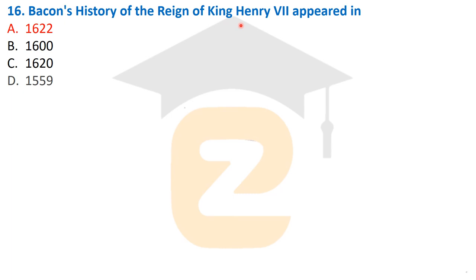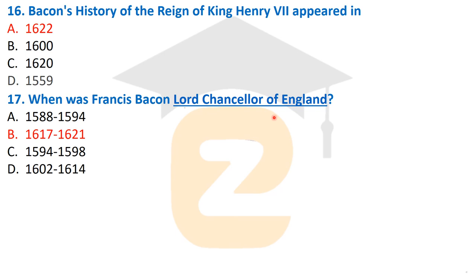Question number 16: Bacon's History of the Reign of King Henry VII appeared in 1622 — it was published in 1622 and is a work related to the Tudor King Henry VII. Question 17: When was Francis Bacon Lord Chancellor of England? That was from 1617 to 1621 — the time during which he held the post of Lord Chancellor of England.